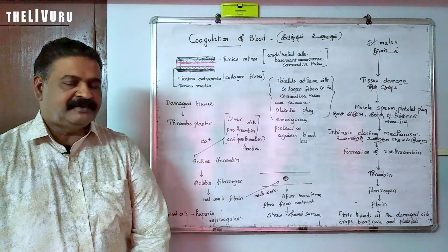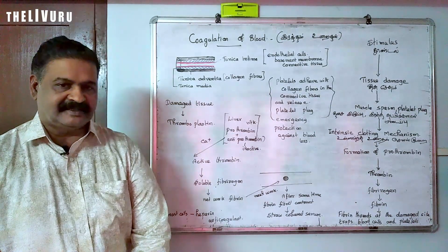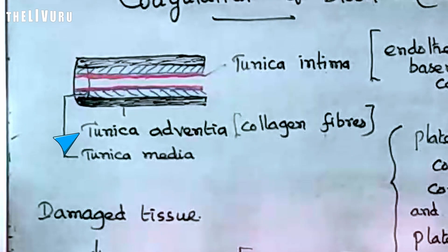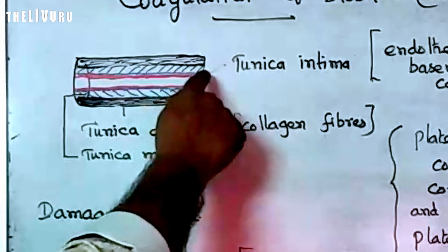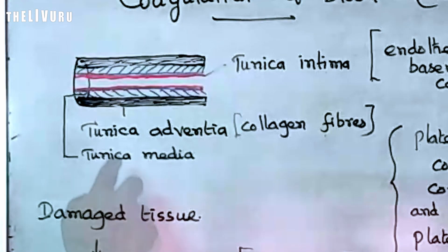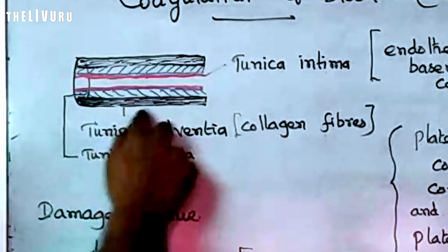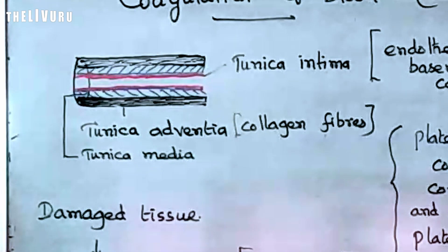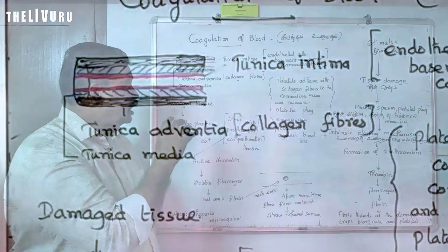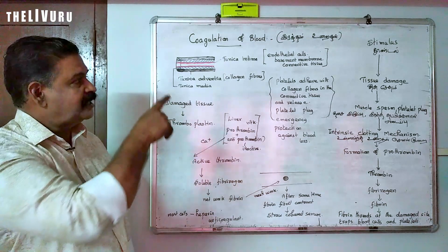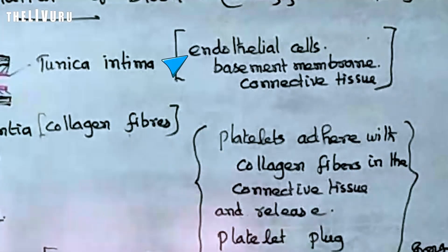The blood vessels are formed of three layers, which are called tunica intima, tunica media, and tunica adventitia. These three layers make up the wall of the blood vessel structure.